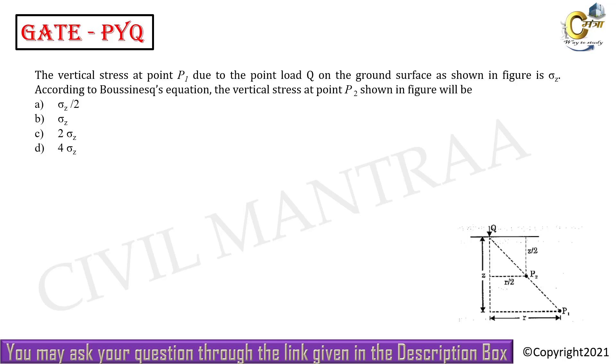Hello students, welcome to Civil Mantra. The question is: the vertical stress at point P1 due to the load Q at ground surface as shown in figure is sigma z. According to Boussinesq's equation, the vertical stress at point P2 shown in figure will be? So the sigma z at point P1 is given, we need to find what sigma z will be at point P2.